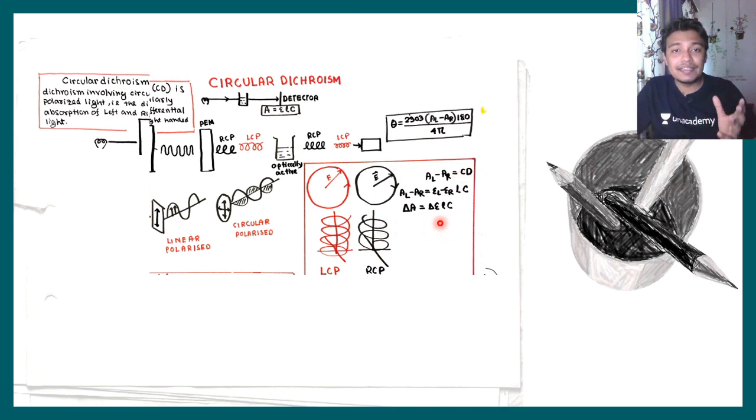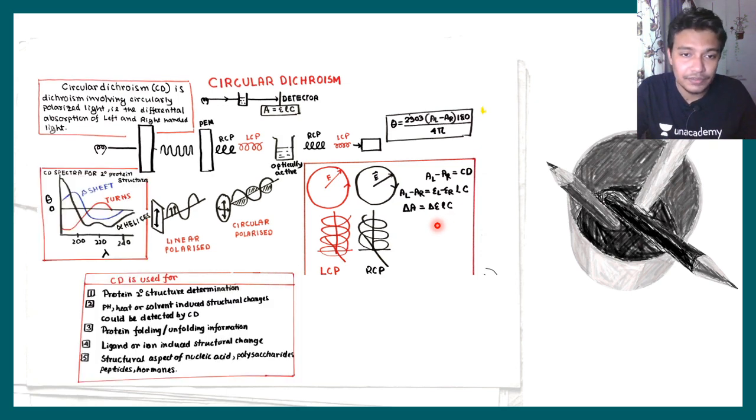This is basically a modification of Beer-Lambert law, which will remind you in the exam. Then the most important part - applications. The biggest use of circular dichroism is determining secondary structure of proteins and other biomolecules. You can also study the effect of pH and solvents on protein folding stability. Lastly, you need to know the circular dichroism signatures of common secondary structures. For example, if it's beta sheet it looks like this, if it's turns it looks like this. This overall profile is important.